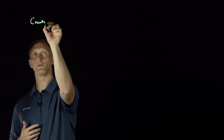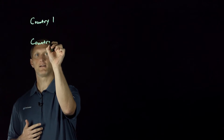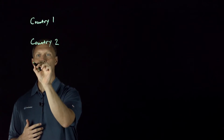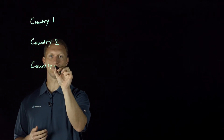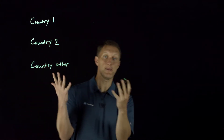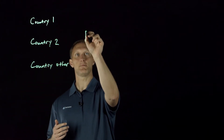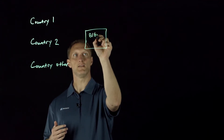Let me draw a couple of little boxes here to outline the scenario. Let's say you have clients coming in, and I'm going to put country number one up here. Then you've got other clients coming in from country number two. And then maybe one last one — country, you know, 'all others.' So here's your Big IP right here.